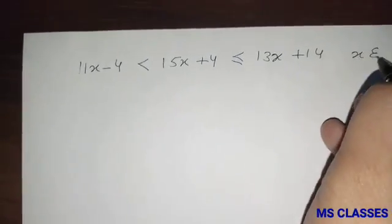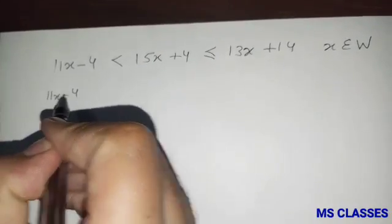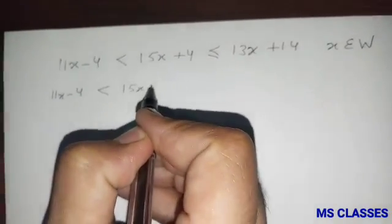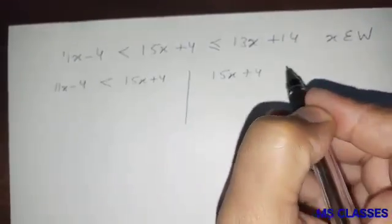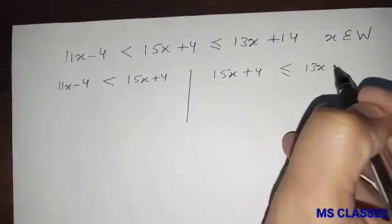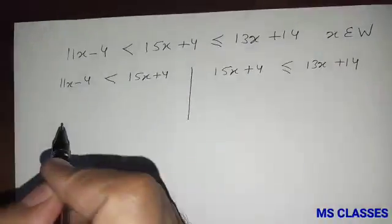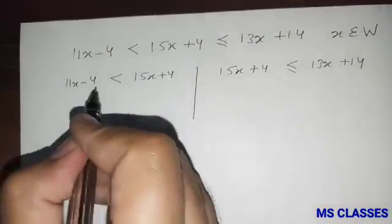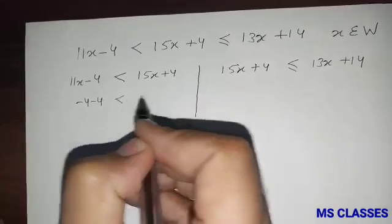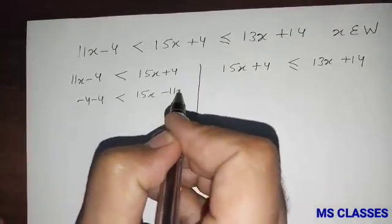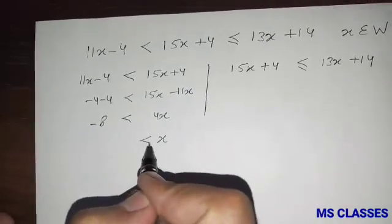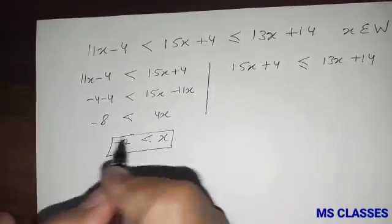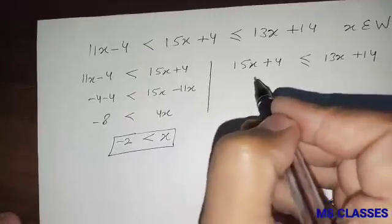Where X belongs to whole numbers. Let's take 11X minus 4 less than 15X plus 4, and 15X plus 4 less than or equal to 13X plus 14. Taking 4 to the other side gives minus 8 less than 4X, so X is greater than minus 2.